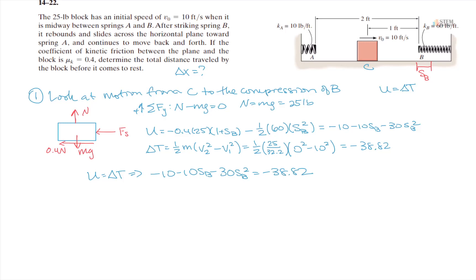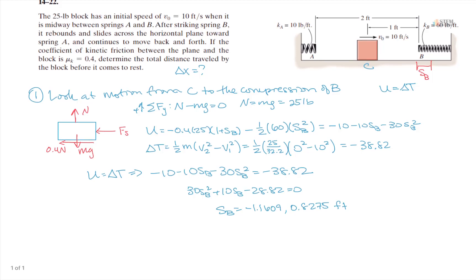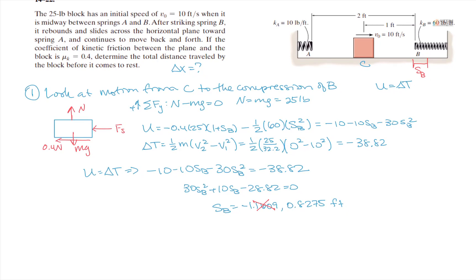Setting U equal to delta T: negative 10 minus 10·SB minus 30·SB² = negative 38.82. Rearranging gives the quadratic: 30·SB² + 10·SB minus 28.82 = 0. Solving this gives two values: negative 1.1609 and 0.8275 feet. Since a length can't be negative, we discard the first solution. So SB = 0.8275 feet — that's the distance spring B is compressed before the block comes to a stop.